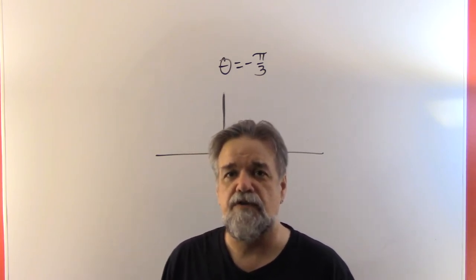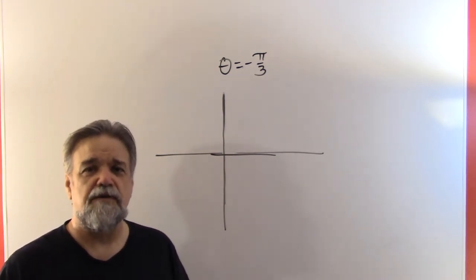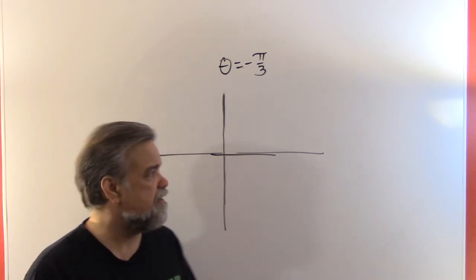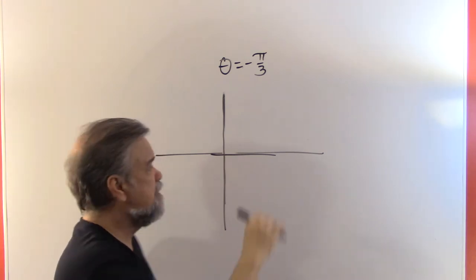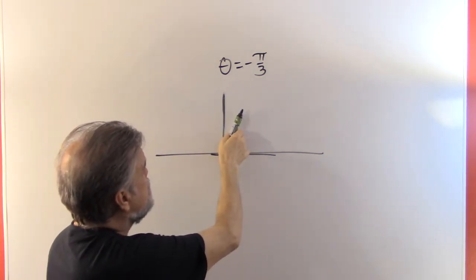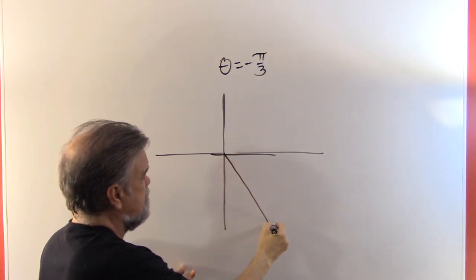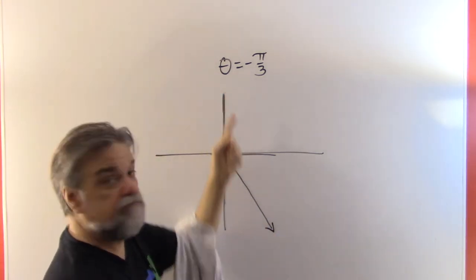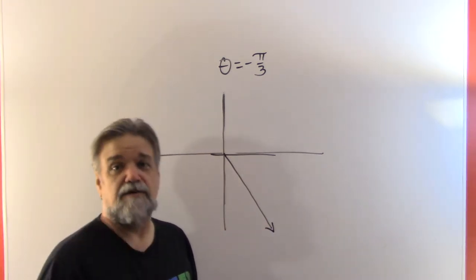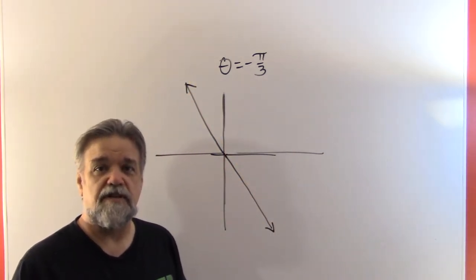Behind me I wrote one equation: theta equals negative pi over three. What would that look like if I were to graph this? Remember, I have two variables. There's r, which tells me how far away I am from the origin, and theta, which tells me what direction I'm pointing in. Pi over three is pointing in that direction, so negative pi over three would be pointing in this direction — down here like this. Now, how many units away am I? It doesn't say. R can be anything, which means every single point on this ray is in the graph. And since r can also be negative, we can also go in the opposite direction, and what we end up having is a straight line going through the origin.